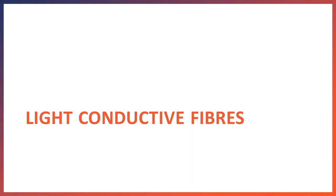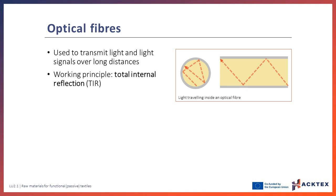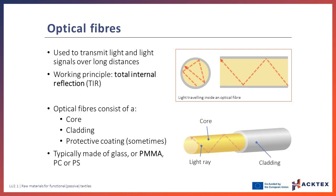Another passive effect that can be applied in smart textiles is light conductivity. Optical fibers are a type of light-conductive fiber used to transmit light and light signals over long distances with minimal loss of signal strength. The basic principle behind optical fibers is total internal reflection, where light entering an optical fiber is reflected off the inner surface and kept confined within it. To this end, optical fibers consist of a core where the light travels, surrounded by a cladding material which keeps the light contained within the core.